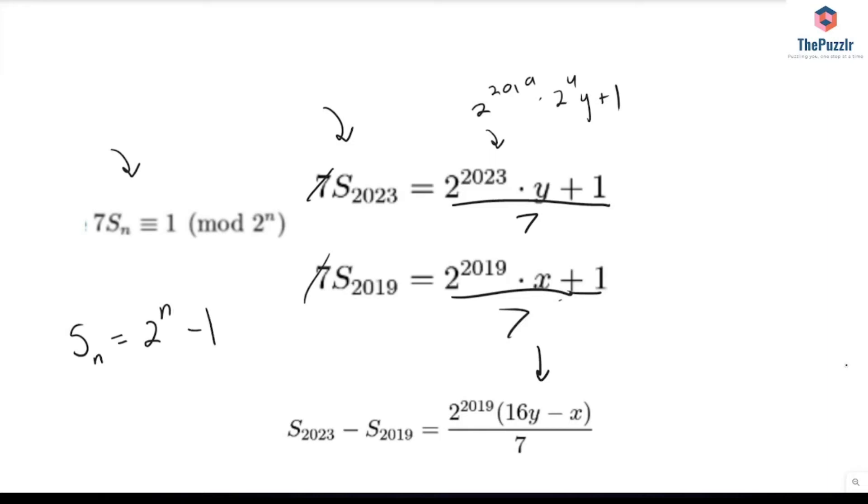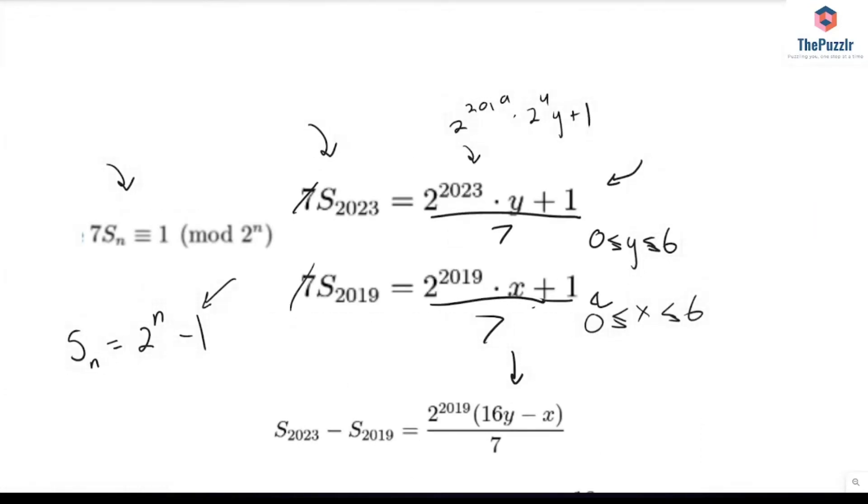And once we have this, well now we can set some bounds on y and x. This equation right here, y can be anywhere from 0 to 6. So 0 is less than or equal to y is less than or equal to 6, because if y is 7, well then this right hand side is not going to follow this rule right here. Same thing with this, x is less than or equal to 6 and greater than or equal to 0.